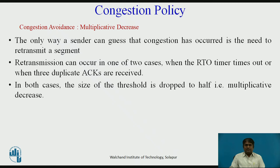If congestion occurs, the congestion window size must be decreased. The only way a sender can determine that congestion has occurred is the need to retransmit a segment. The retransmission is needed to recover a missing packet, assumed to have been dropped by a router that had too many incoming packets and became overloaded or congested. Retransmission can occur in one of two cases: when the RTO timer expires, or when three duplicate ACKs are received. In both cases, the size of the threshold is dropped to half — a multiplicative decrease.